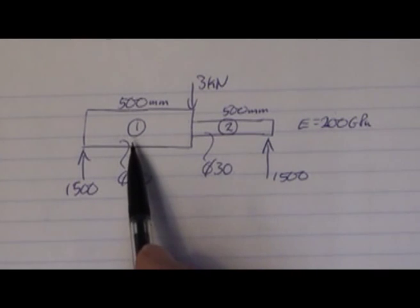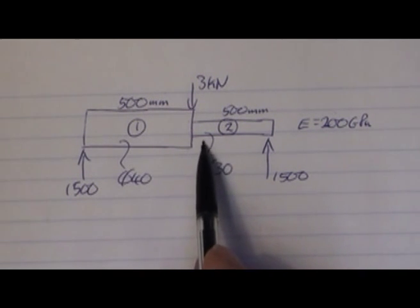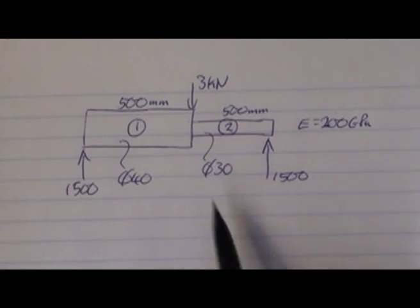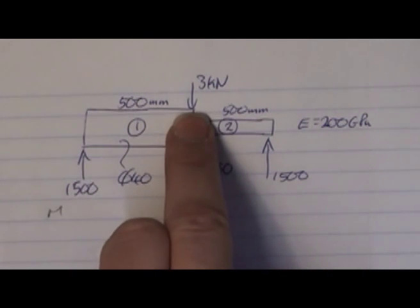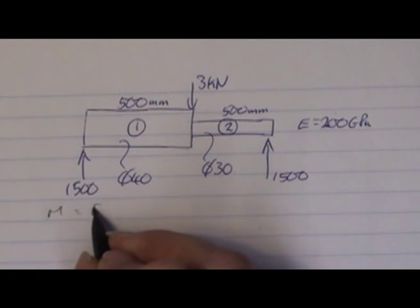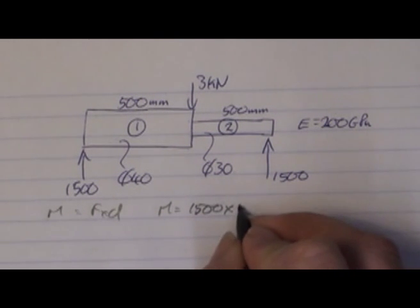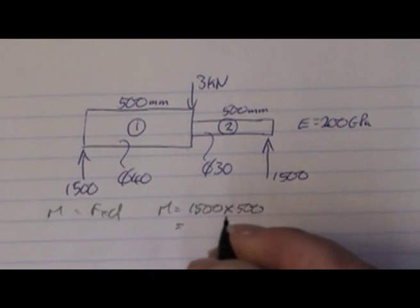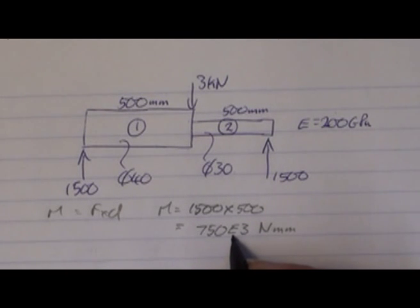Today we're looking at a stepped beam: one metre long, half a metre is 40mm diameter, half a metre is 30mm diameter, with a central load of 3 kilonewtons. My moment at the centre will be 1500 times 500 millimetres — force times distance — so moment equals 1500 times 500, which is 750 times 10³ newton millimetres. I'm going to use E3 for exponent 3 as we work through these problems.